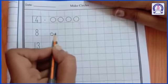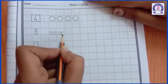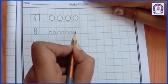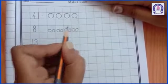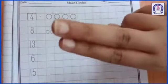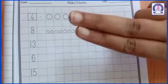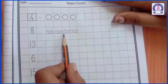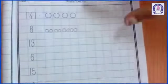1, 2, 3, 4, 5, 6, 7, 8. That means, यहाँ पे आपको एक बॉक्स में 2 circles बनाने है। यहाँ पे जो नम्बर लिखा है, उतने circles आपको बनाने है। एक बॉक्स में 2 circles। Okay.